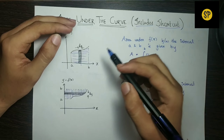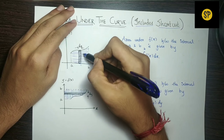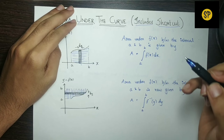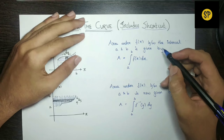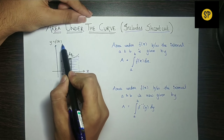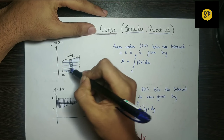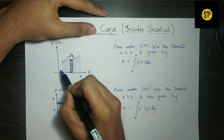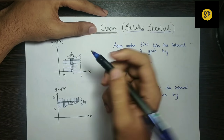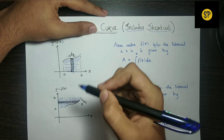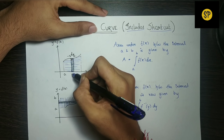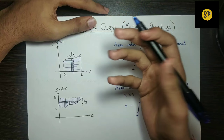Think of it as a strip. The width is DX. The length of the strip is the y value at that point — that is the variable. For example, if x equals 2, then y equals 10, making that point (2, 10), so this strip's length is 10.